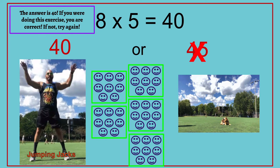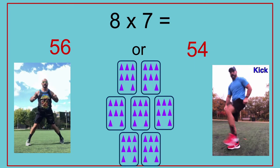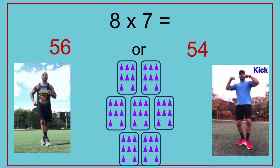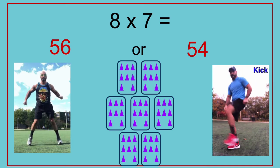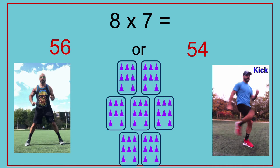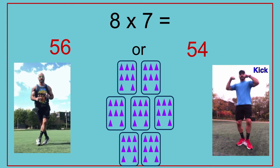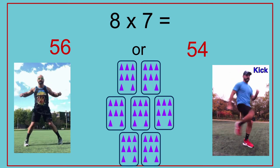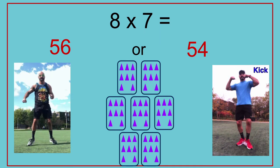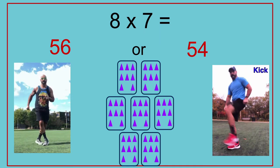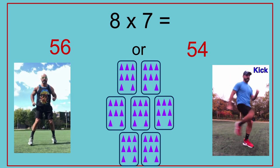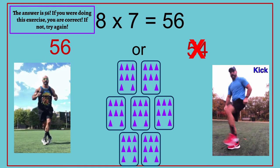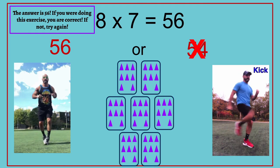8 times 7 equals — 56 or 54? The answer is 56. If you were doing this exercise, you are correct. If not, try again. 8 times 7 equals 56.